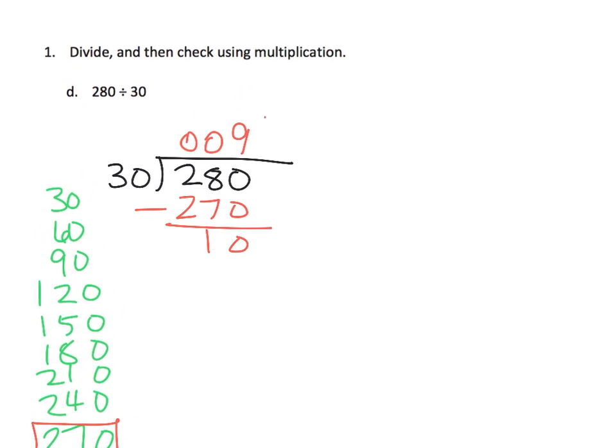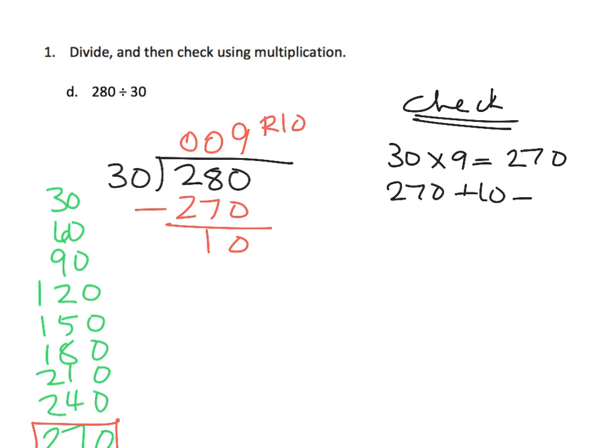And so to check, we're going to take that 30 and multiply by 9. 30 × 9 is 270. And then 270 + 10 gives us 280. Where did that 10 come from? That 10 came from our remainder. So hey, look at that. We got 280. That's what was in the house, the dividend. So we're correct.